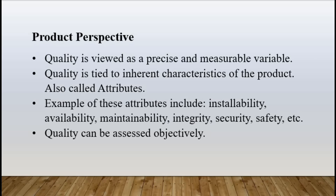Product perspective. In this approach, quality is viewed as a precise and measurable variable. Quality is tied to inherent characteristics of the product. These characteristics are referred to as quality attributes of the software. Examples of these attributes include installability, availability, maintainability, integrity, security, and safety — there are many of them. Because quality reflects the presence or absence of measurable product attributes, it can be assessed objectively. The more the software has high levels of these characteristics, the higher its quality will be.